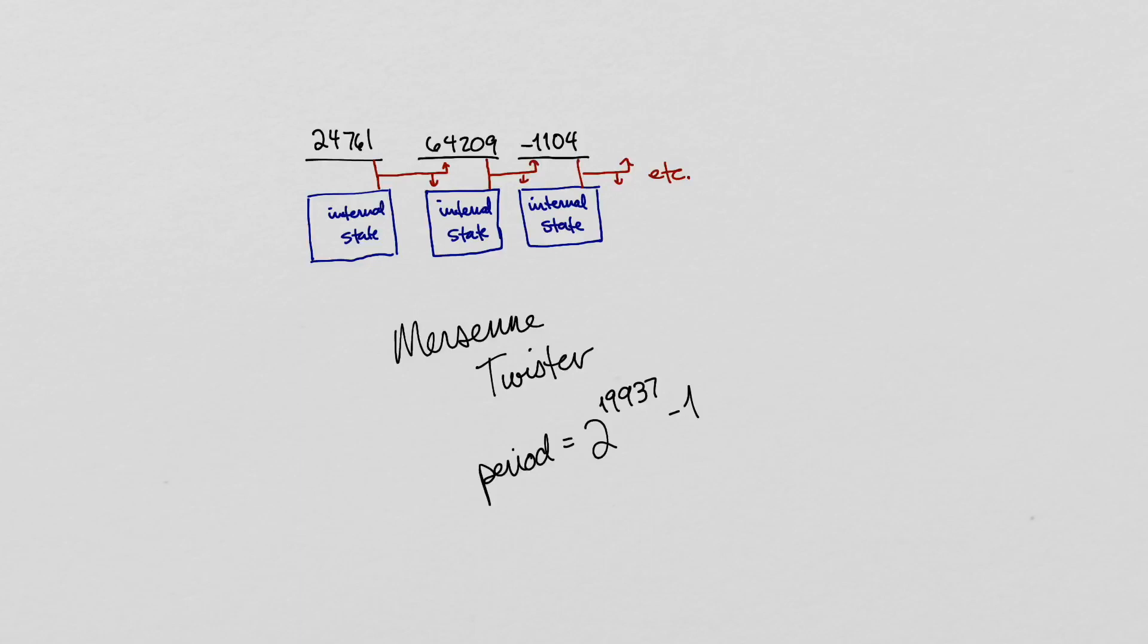Most pseudo-random number generators, including linear congruential generators and Mersenne Twisters, are not cryptographically secure.